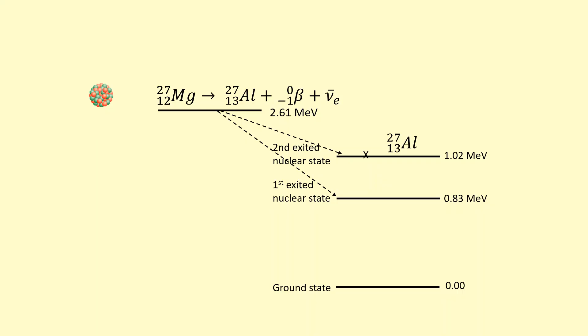So let's say we form it in the second excited state here. Now this allows us to actually figure out the kinetic energy with which the electron is emitted. Because we're going from this energy level here for the magnesium nucleus to 1.02 mega electron volts, you just subtract them and that's the kinetic energy with which the beta particle will be emitted.